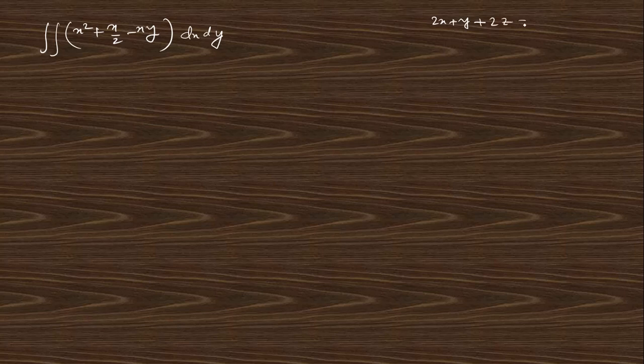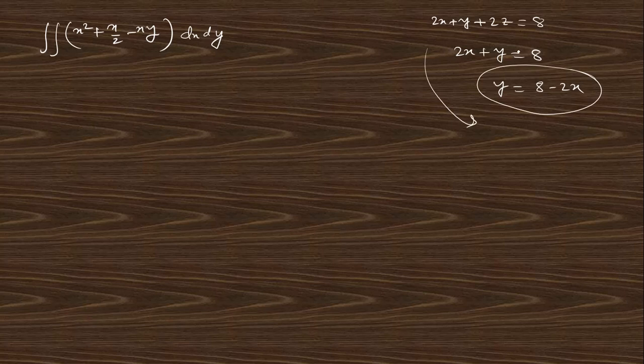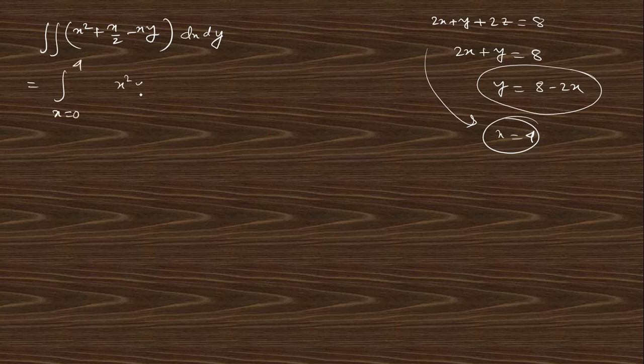What is the limit of y? From the plane equation 2x + y + 2z = 8, putting z=0 gives 2x + y = 8, so y = 8 − 2x. The limit of y is 0 to (8 − 2x) and x ranges from 0 to 4. Integrating with respect to y: [x²y + (x/2)y − x(y²/2)]₀^{8−2x} dx.